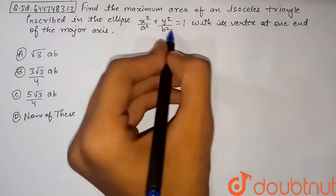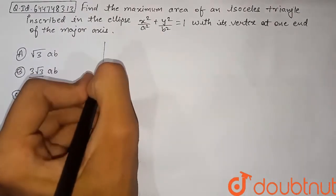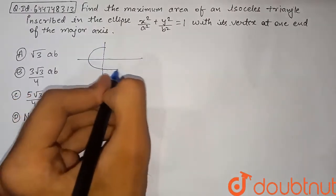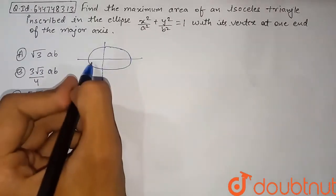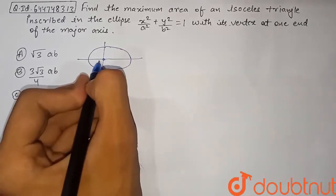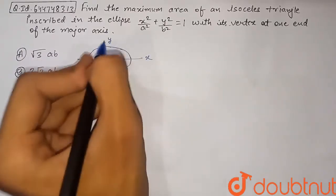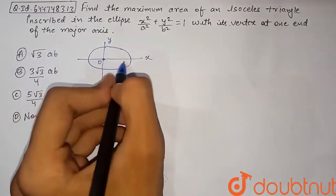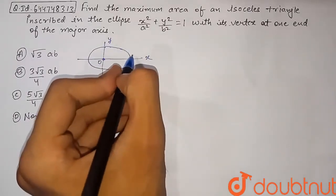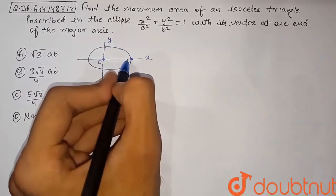If we draw the rough sketch of the ellipse x²/a² + y²/b² = 1, we have the y-axis and the x-axis. The ellipse is symmetric about both axes, and the center is the origin O. The x-axis is the major axis for this ellipse. We are drawing an isosceles triangle with one vertex at the end of the major axis.